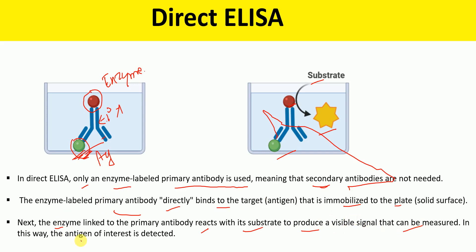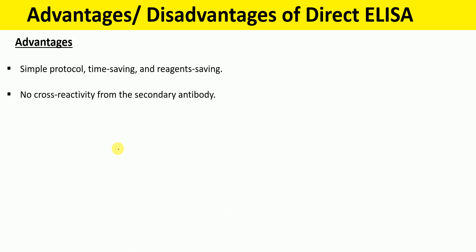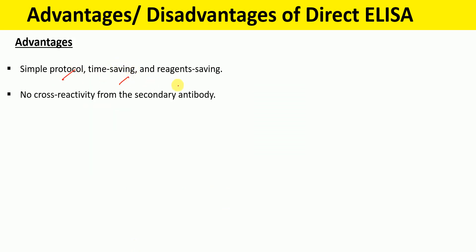In this way, the antigen of interest can be detected. What are the advantages of direct ELISA? Direct ELISA is a simple protocol, it is time saving, and also reagent saving, because we only use a primary antibody that is labeled with an enzyme. There is no cross-reactivity from the secondary antibody, because the secondary antibody is not used in direct ELISA.